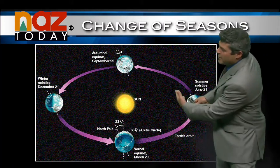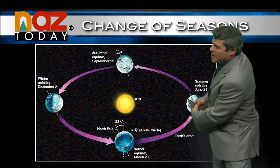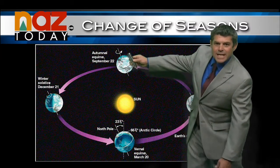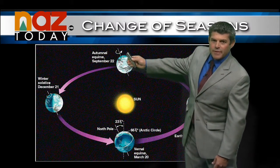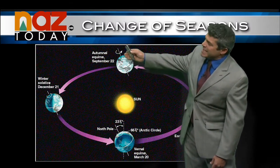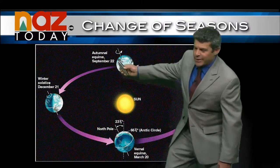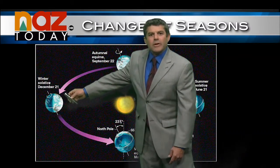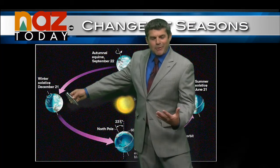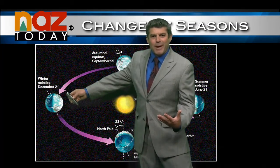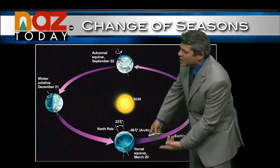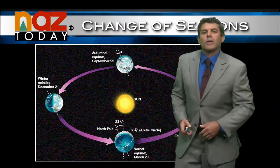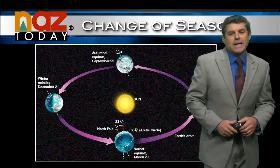Notice the northern hemisphere facing the sun — longer days. We head towards fall and notice that neither the northern nor the southern hemisphere is facing the sun, so it's equal days, equal nights. And we get towards the winter solstice and the southern hemisphere is in the summer hemisphere, facing the sun. And then we're at another equinox in spring with neither the north or the south facing the sun.